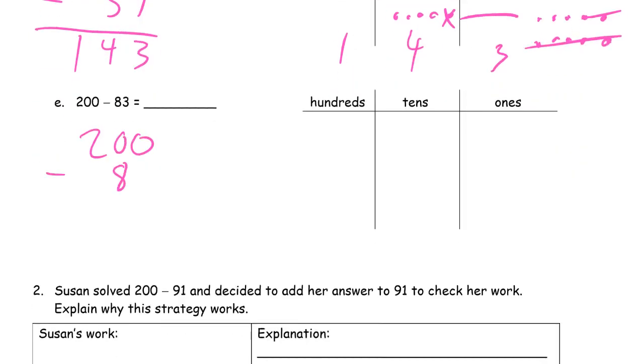200 minus 83. You know what? I've got to start this a little bit lower. Because this is going to get pretty busy above. So I'm going to give myself more room. 200 minus 83. Cross out 100. 10 tens. Unbundle a 10. I'll have 9 tens left. 10 ones. 10 minus 3 is 7. 9 tens minus 8 tens is 1 ten. And then I still have that 100.